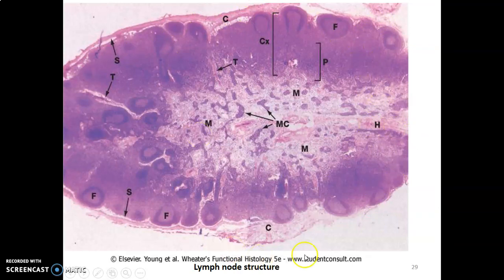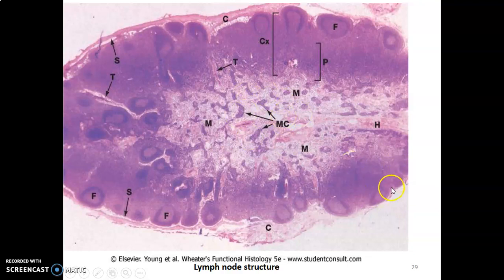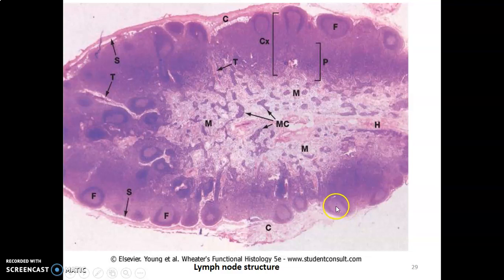To summarize the lymph node histology: it is a kidney-shaped organ with a fibrous capsule and a subcapsular space. It has an outer cortex and an inner medulla. The cortex is subdivided into an outer portion with lymphoid follicles containing lymphocytes and germinal centers, and a deeper paracortical zone. The medulla contains medullary cords and sinuses. The capsule also sends trabeculi into the gland.